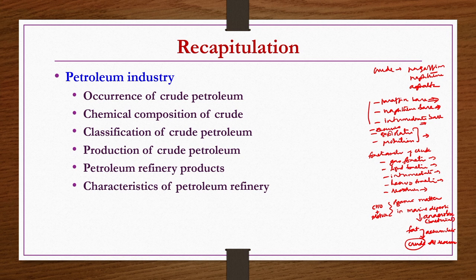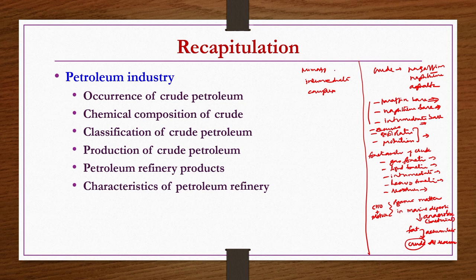Characteristics of petroleum refinery were discussed — whether it is a primary, intermediate, or complex refinery. In a primary refinery you typically have a single fractionation column where you separate residues and asphalt, selling the remaining crude to other refineries for further processing. In complex refineries, any kind of crude can be handled, and we saw flowcharts showing different types of fractions and how each is processed.